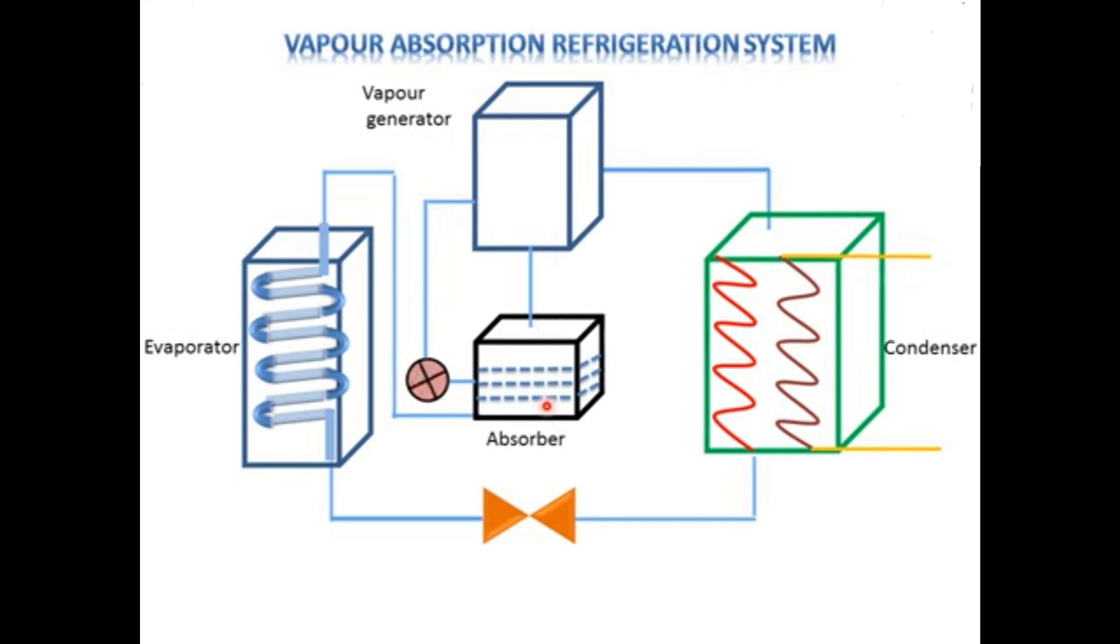So the devices which we use in Vapour Absorption Refrigeration System are Evaporator, Absorber, Pump, Vapour Generator, Condenser and Expansion Valve. In these systems Ammonia is used as a refrigerant.